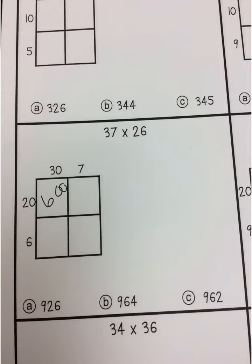Then we have 30 times, I'm sorry, 20 times 7, which is 2 times 7. Add in 1 zero, 140. 30 times 6.